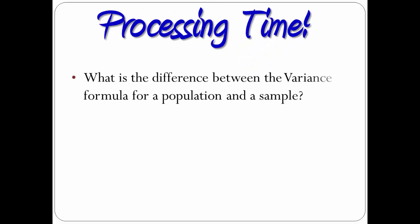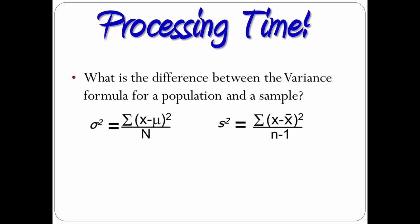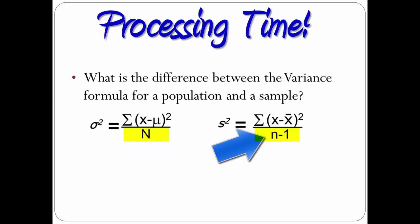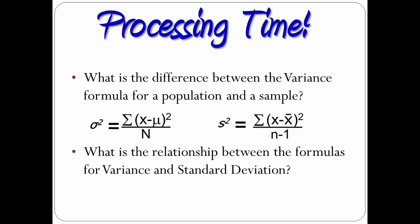Processing time. What is the difference between the variance formula for a population and a sample? Other than the symbols, the major difference comes in the denominator. For a population, you divide by the number of observations in the population, N. For a sample, you divide by the number of observations in the sample minus 1, or n minus 1. What is the relationship between the formulas for variance and standard deviation? Standard deviation is the square root of variance. If you know the variance, you can calculate standard deviation. Similarly, if you know standard deviation, square it and you've got the variance.